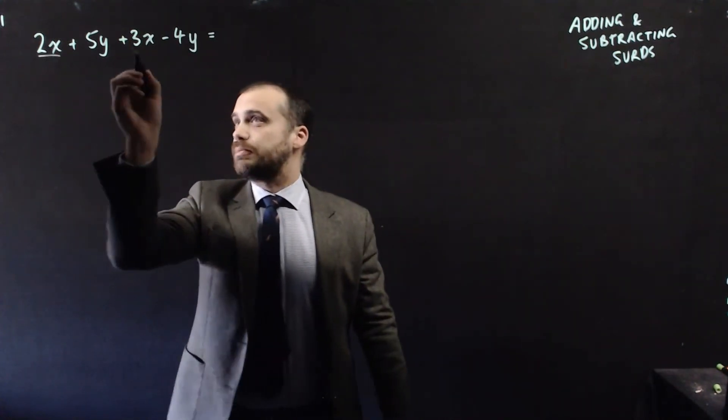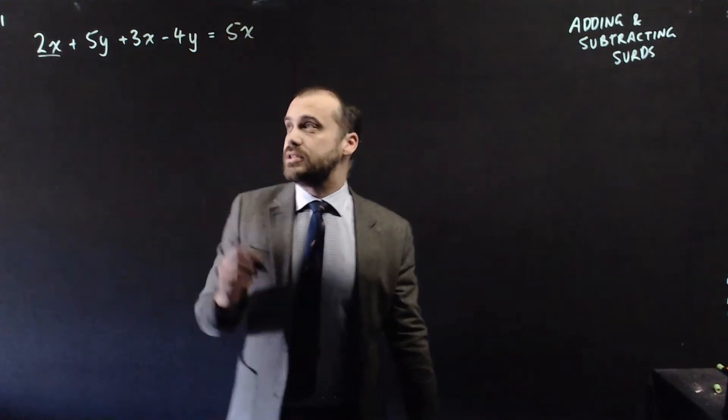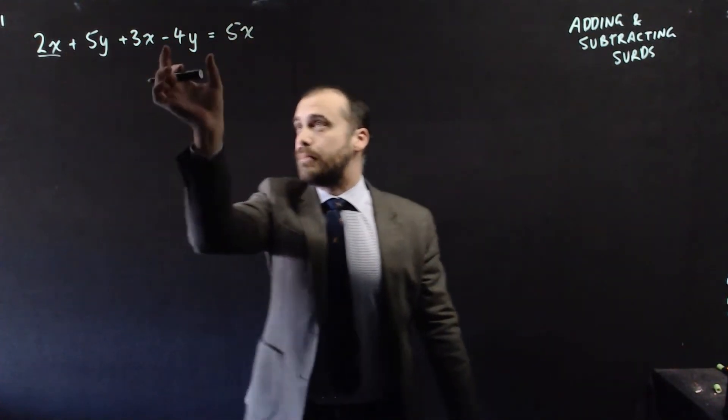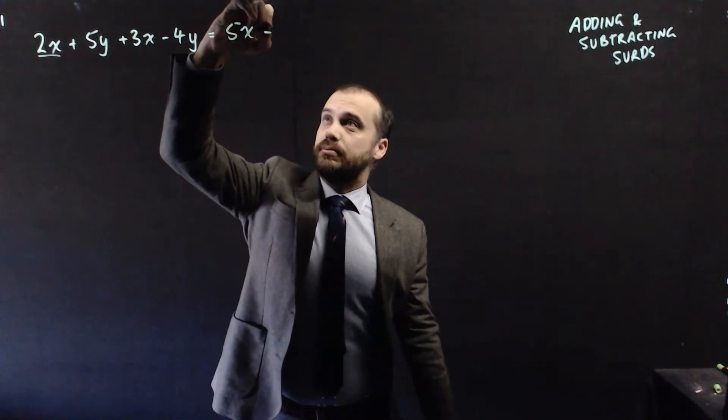So 2x plus 3x makes 5x and 5y minus 4y makes positive y.